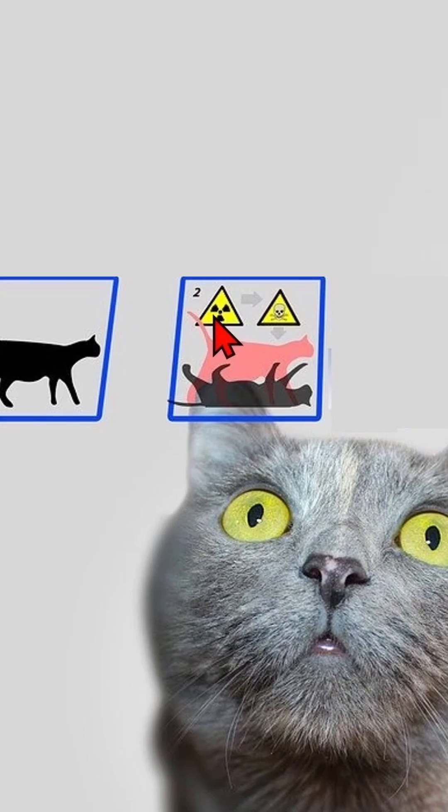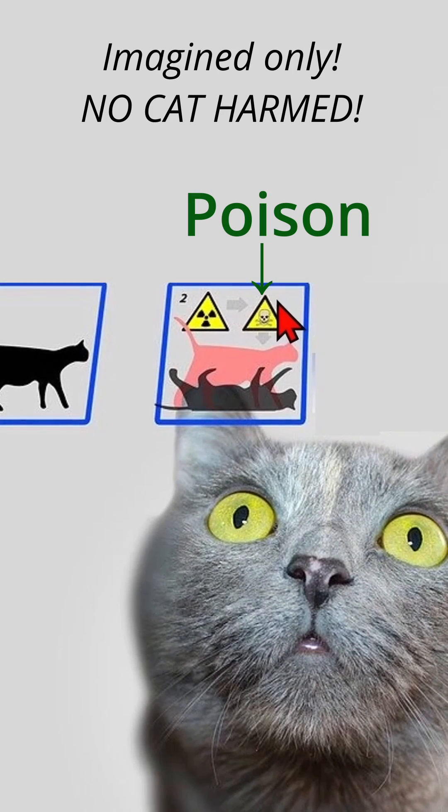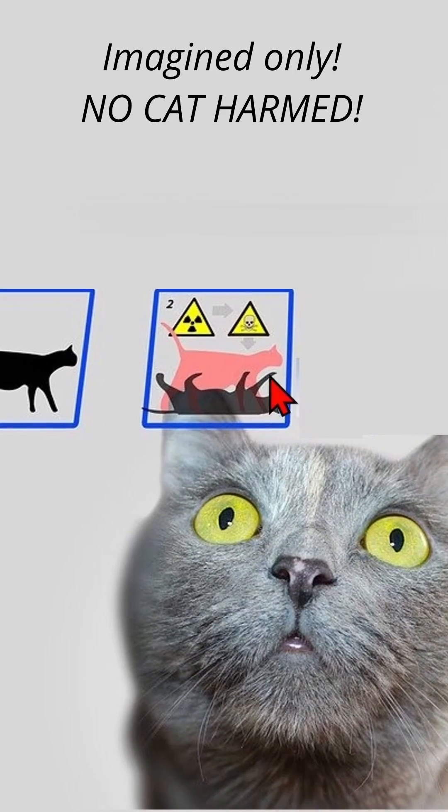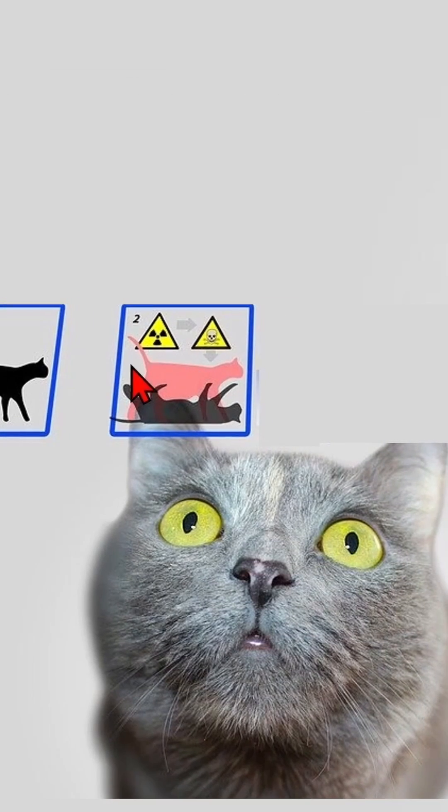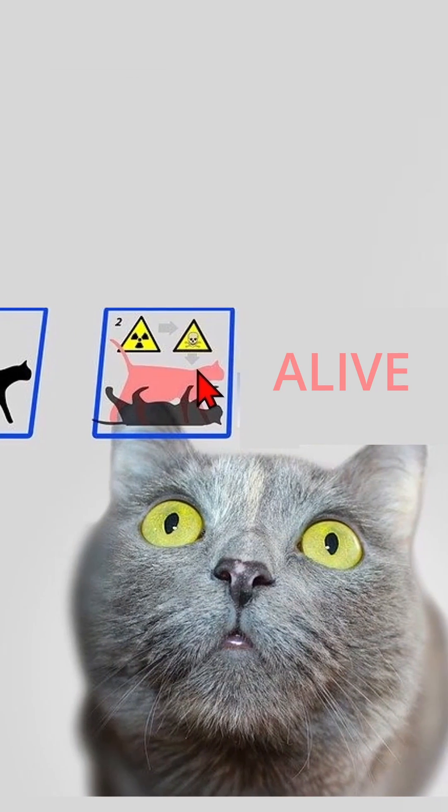If the radioactive source decays then poison is released into the box and the cat dies. If the radioactive source does not decay there is no poison released and the cat remains alive.